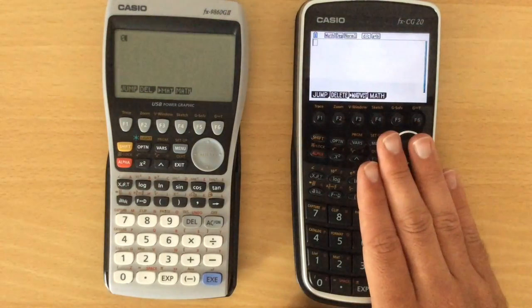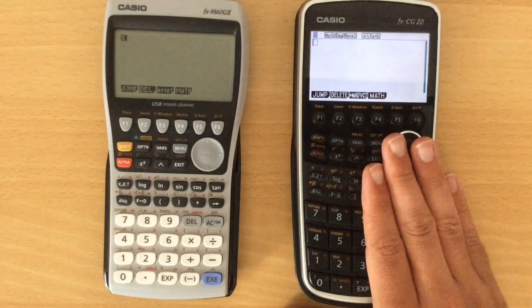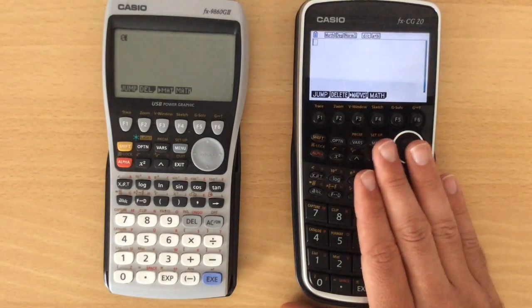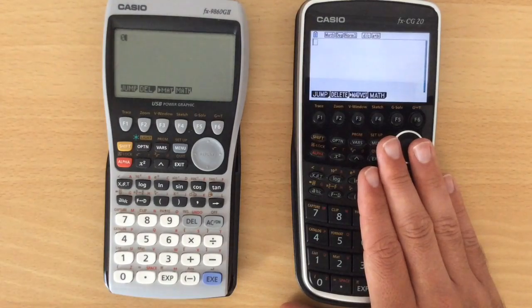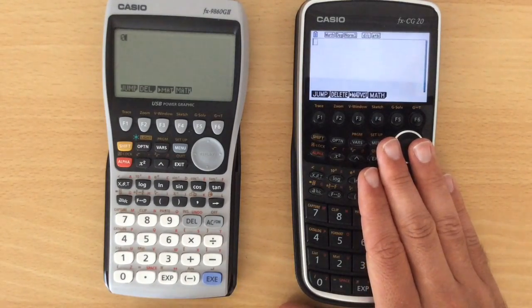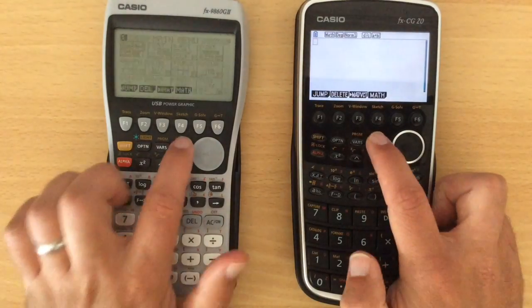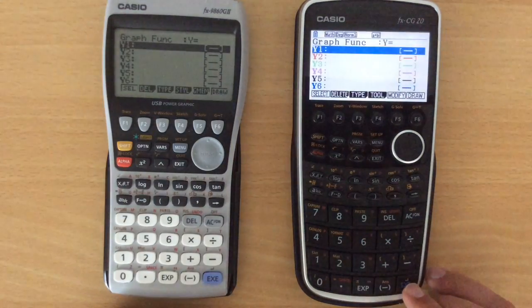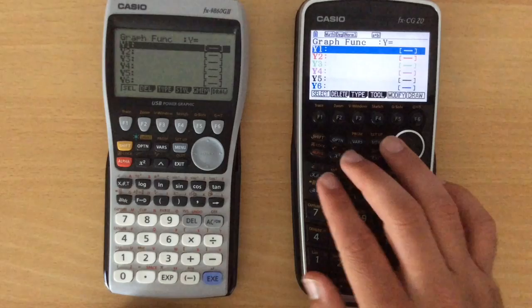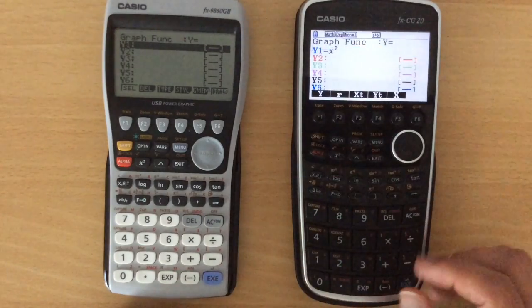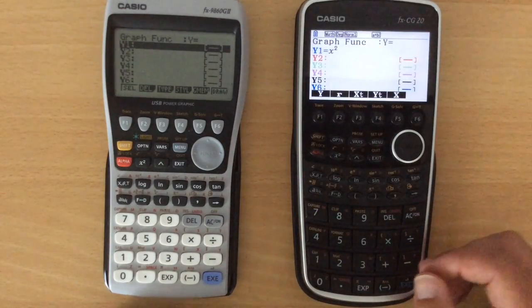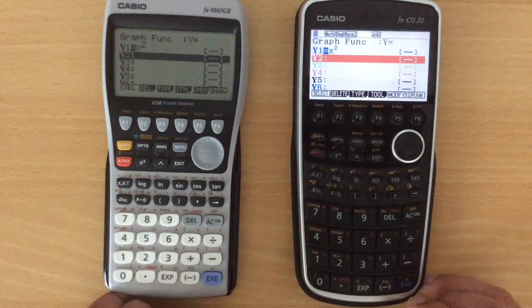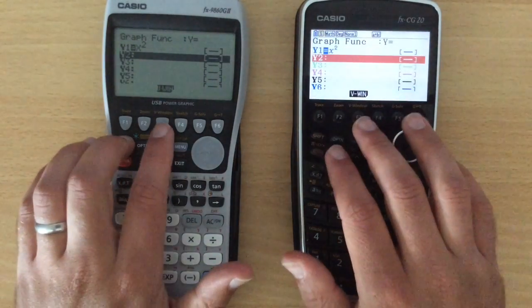One thing that this will do quite nicely is real-time integration. Now what we mean by that is that it will do a numerical calculation on what an integral will be. To demonstrate this, and I'll try and do it with both calculators at the same time, if we go into the graph mode, and let's draw some simple graph like, I don't know, x squared. Let's just do x squared in both of them, so we can see the difference in the graphing mode.